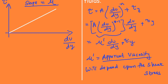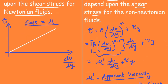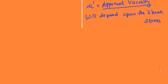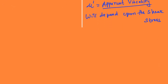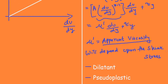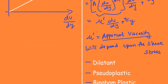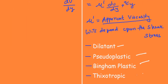If we plot the graph for non-Newtonian fluids, it won't be linear — it will be a curve. Depending on the type of curve, we have various classifications of non-Newtonian fluids. Based on the flow behavior index n, we classify them as dilatant, pseudoplastic, Bingham plastic, or thixotropic, each having different curves on the rheological graph.